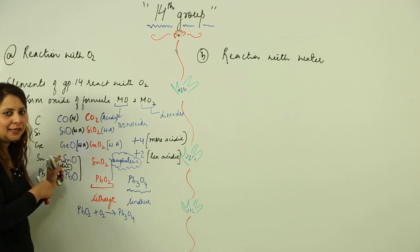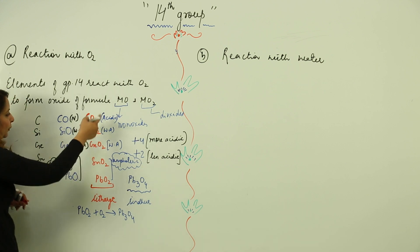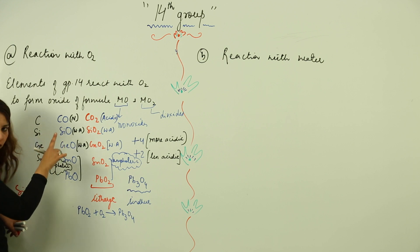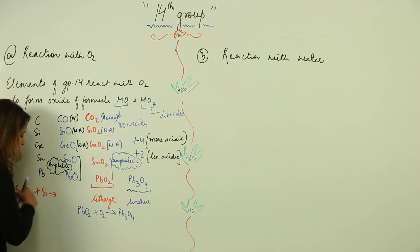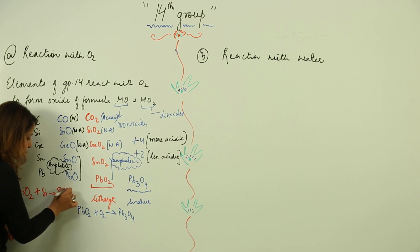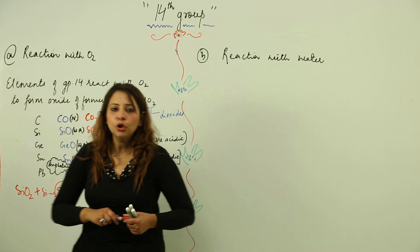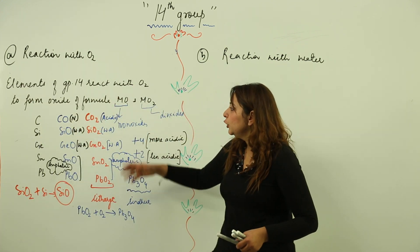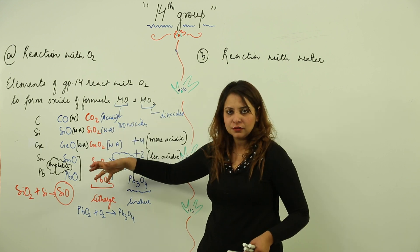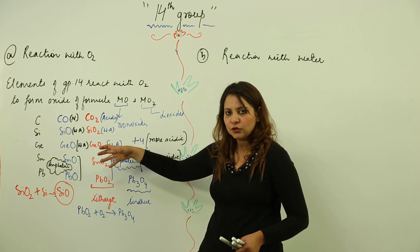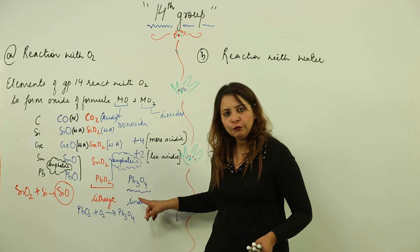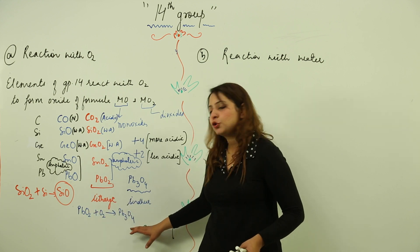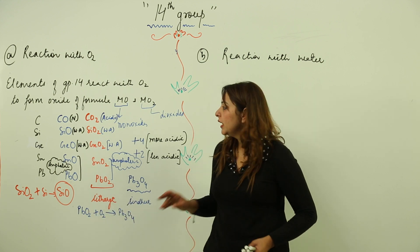Monoxides are formed when you use a dioxide and add more of the same element to it. For example, to form silicon monoxide, take silicon dioxide and add more silicon — it turns into the monoxide. The same process applies: take the dioxide, add the same element, and you get the monoxide. For Pb3O4, the reaction is: PbO2 + O2 gives Pb3O4.